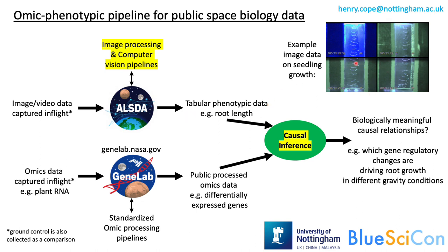For the example in the top right, which is plants growing in space, I might be looking at things like root length. The idea is then to use some kind of causal inference model — we're still working on what to use — to combine the phenotypic data with the processed omic data, and hopefully to get meaningful causal relationships, such as which genes might be involved in driving things like root growth in space.